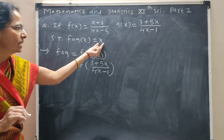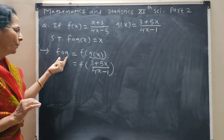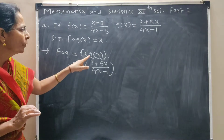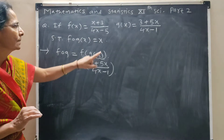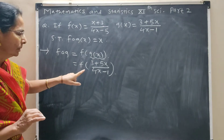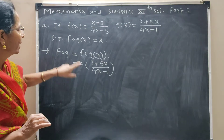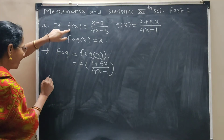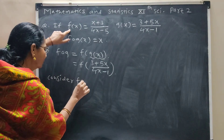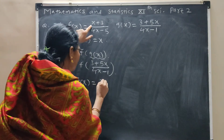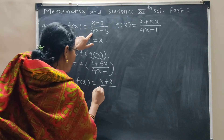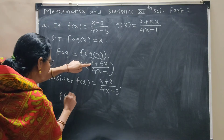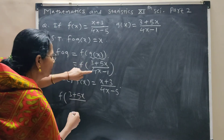fog of x is equal to x. We have to show fog of x, so we write fog. fog formula: fog equals f applied to the value of g(x), that is (3 plus 5x) upon (4x minus 1). For finding this value, we consider f(x) equal to (x plus 3) upon (4x minus 5). We now find f of (3 plus 5x) upon (4x minus 1).